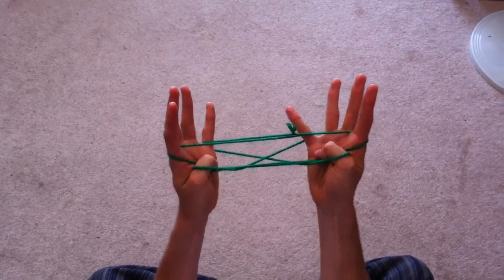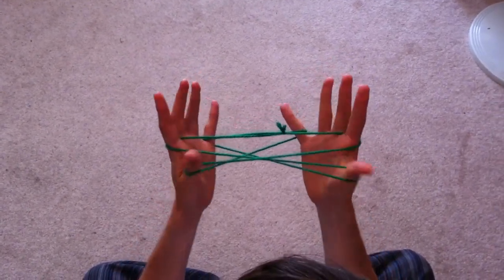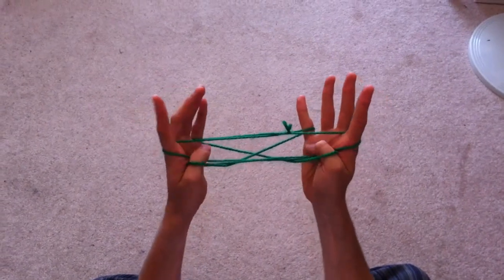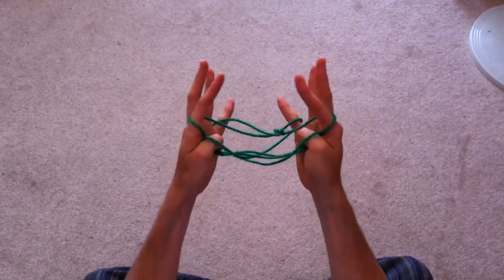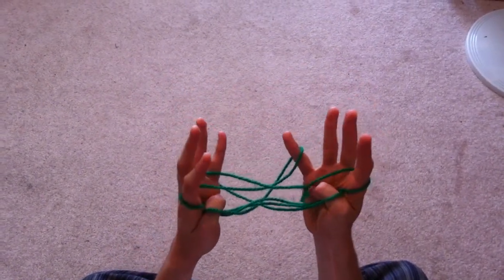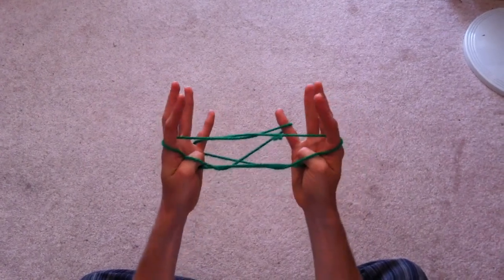You don't want any other strings crossing this area. Once your thumb has crossed over that near pointer string and is holding down, tilt your hands forward and let go of pointer and pinkies on both hands.